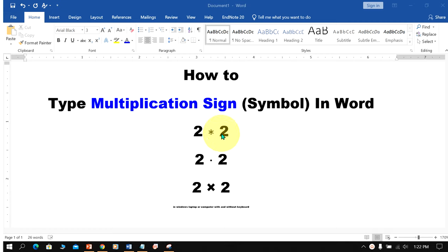There are three types of multiplication: asterisk, dot, or multiplication sign. Let's get started.